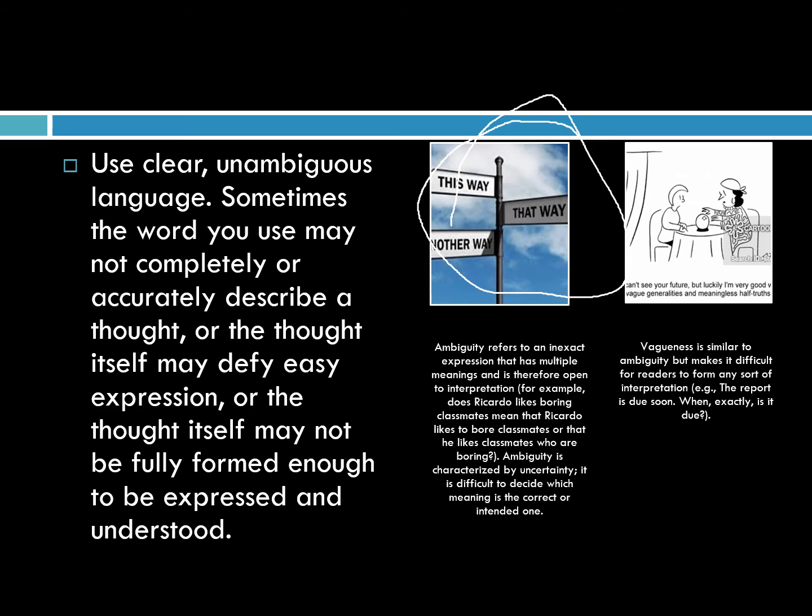As a practical example: if you don't know when a report is due and you're responsible for it, you can always ask so that you can include an actual date. If there is genuine uncertainty and no one knows, then actually say that — for example: 'The due date is not known at this time, but I will keep you posted,' or something along those lines.